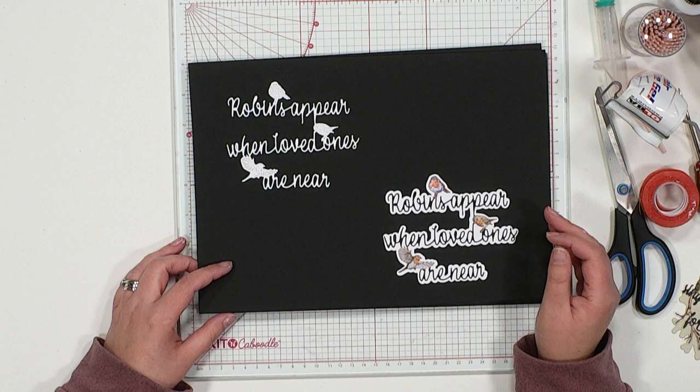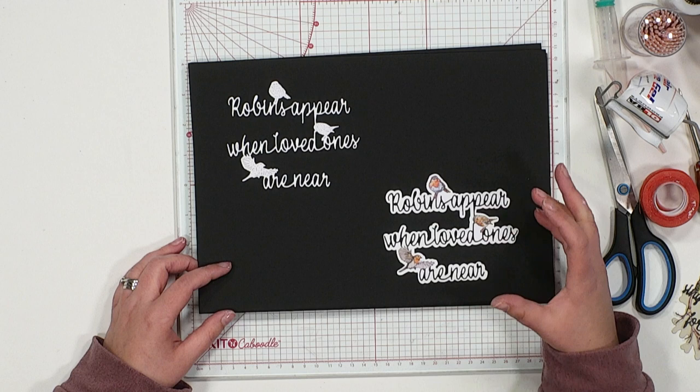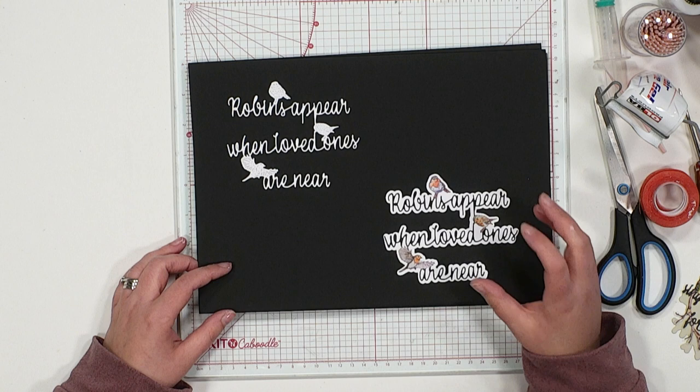Each one of the sentiment dies within the Words for a Loved One collection comes with its own backing as well. You've got this lovely surround to really heighten and highlight your sentiment designs.